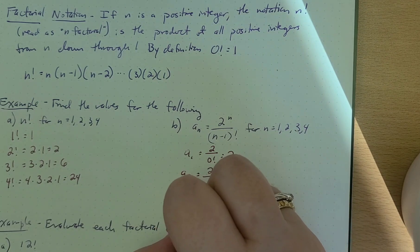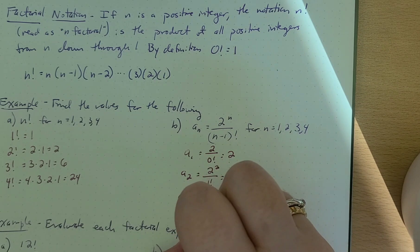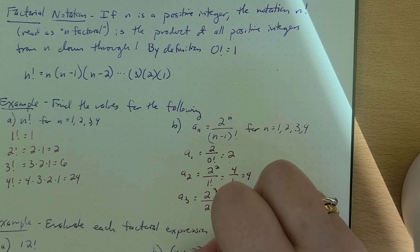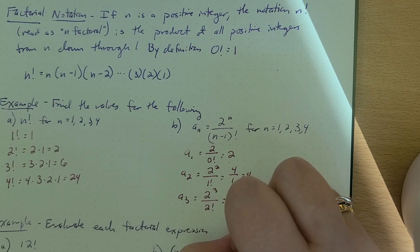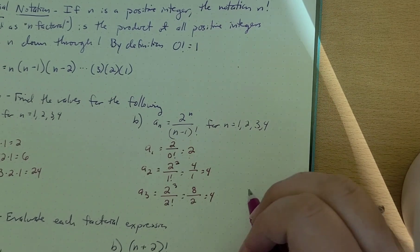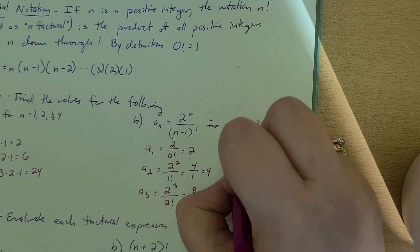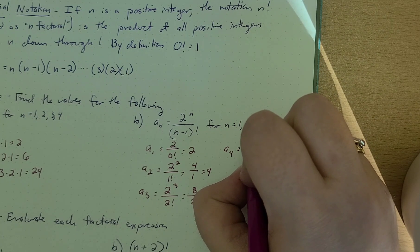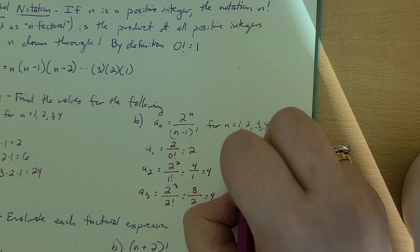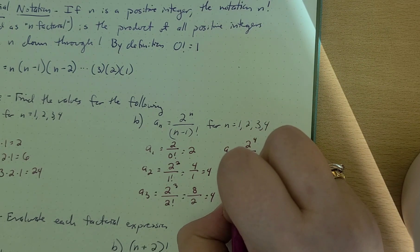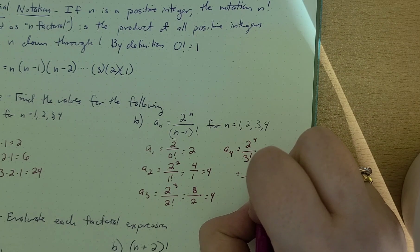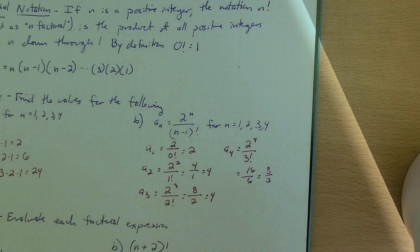a sub 3 is equal to 2 cubed over 2 factorial. So that's equal to 8 over 2, which is equal to 4. I'm kind of running out of room here. But a sub 4 is equal to 2 to the fourth power over 3 factorial. So that's equal to 16 over 6, which is 8 thirds. Okay.